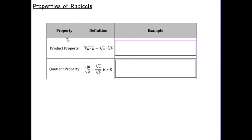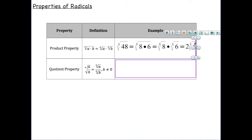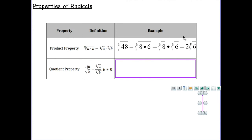For the product property, the nth root of a times b means we can take the nth root of each factor separately. For example, the cube root of forty-eight — forty-eight is not a perfect cube, but we can write it as the product of eight and six. The cube root of eight is two, so we separate them, giving us two times the cube root of six. Remember to include the index of three since we are taking the cube root.